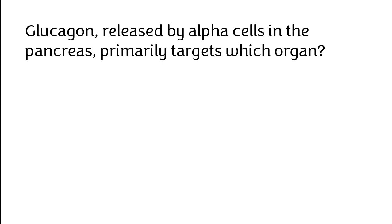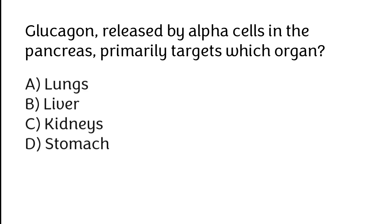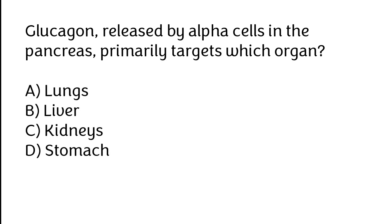Glucagon released by alpha cells in the pancreas primarily targets which organ? Lungs, liver, kidneys, stomach. The correct answer is option B: glucagon released by alpha cells in the pancreas primarily targets the liver.